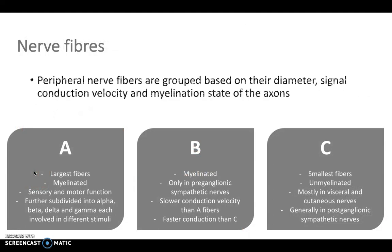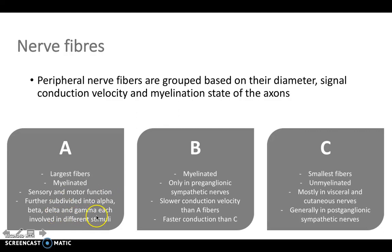In terms of nerve fibers, peripheral nerve fibers are grouped based on their diameter, their signal conduction velocity, and how myelinated they are. A fibers, or alpha fibers, are the largest fibers and they're myelinated. They're sensory and motor in function, and they can be further subdivided into alpha, beta, delta, and gamma, which are each involved in different stimuli.